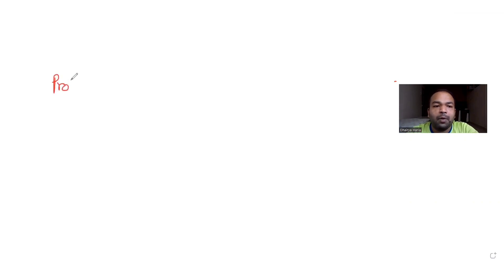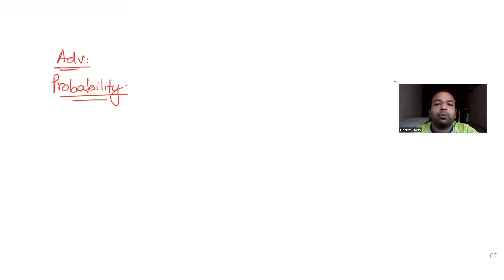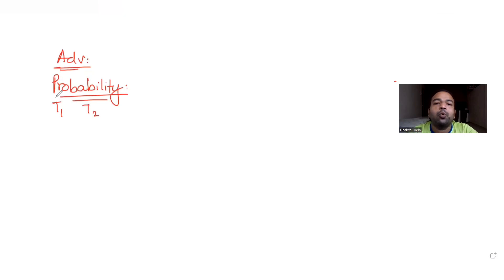Hi guys, I hope you are all doing well. Today's question is taken from the topic of probability and we are continuing our series of questions on JEE Advanced. We are taking up this question from year 2016, and we have been told that there are two football teams T1 and T2 which are going to play two games against each other.